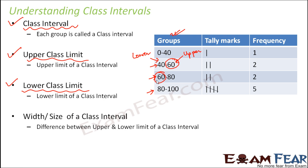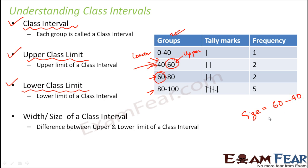Next is the size or width of a class interval. That is given by the difference between the upper and the lower limit of a class interval. So if I want to find out the size of this class interval, the size equals upper class limit minus lower class limit, which equals 20. So the size of the class interval would be 20. The size depends on the values of the lower and upper limits.